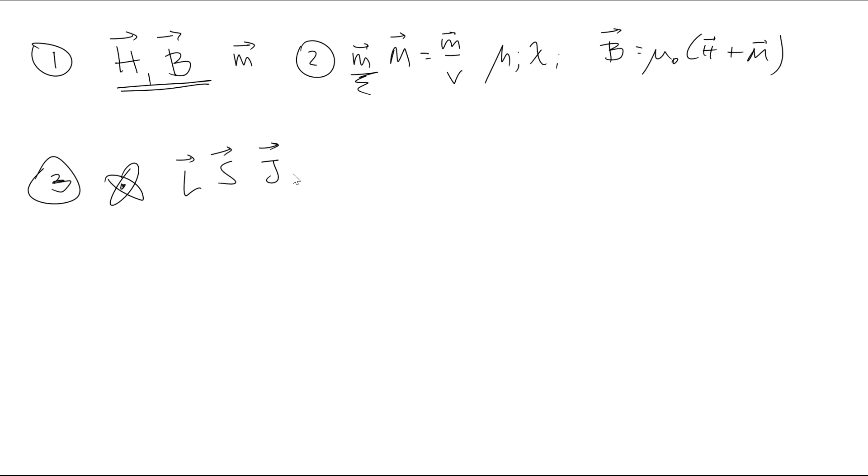A third part was the discussion of electronic structure. We discussed L, S, and J, and how those contribute for multi-electron atoms to magnetic moment. The important part was that we were able to calculate this for different elements. But importantly, iron, for example, can be in two plus state or three plus state or other states, dependent on the material it's forming.